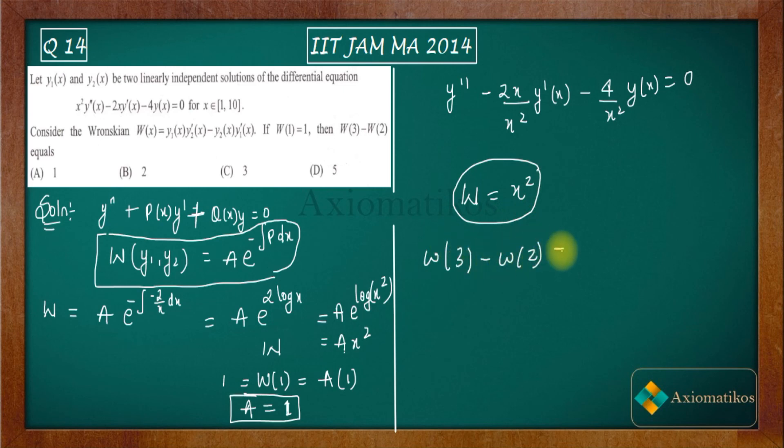So see how easy this question is if you just know the formula for the Wronskian of a second order homogeneous differential equation. Then you are done, you don't have to do anything. So this is your answer now. Let me just mark the correct one. D is your correct answer, and C is incorrect, B is incorrect, and A is incorrect. So this is how we can solve. Thank you.